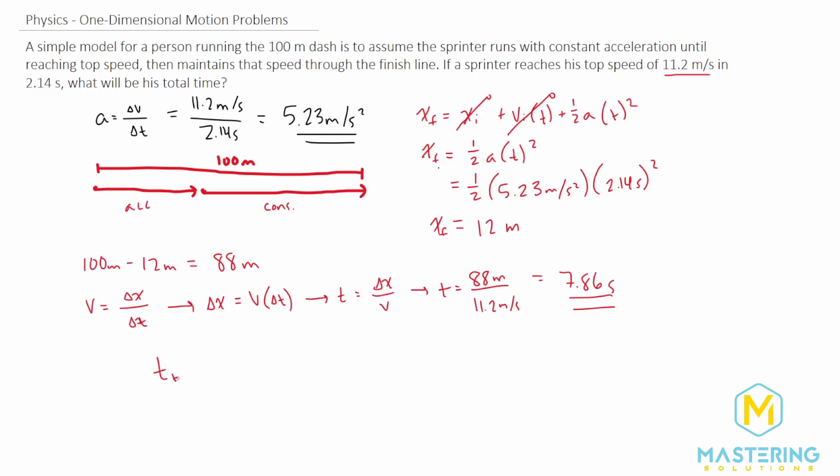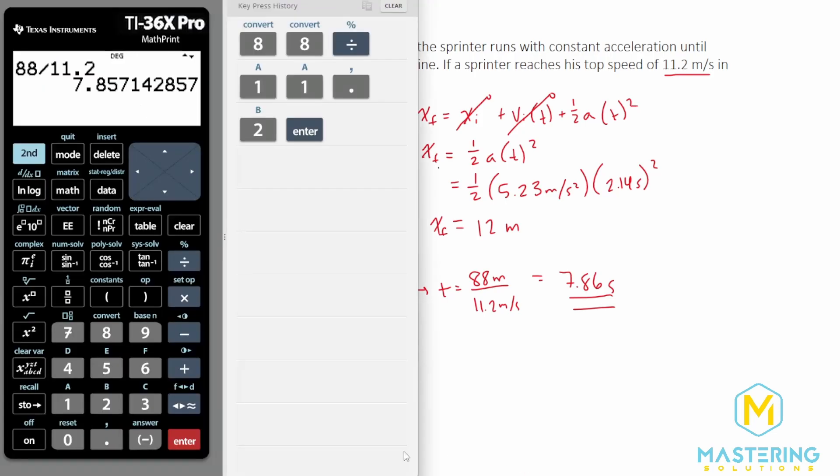For the total time, t_total equals 2.14 seconds for the first section plus 7.86 seconds for the second section.